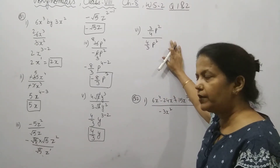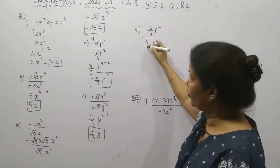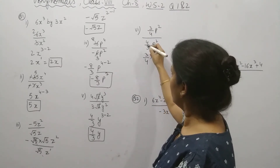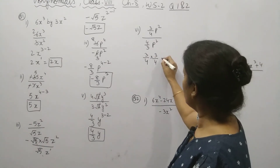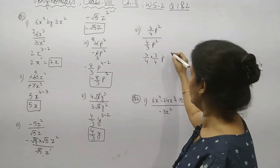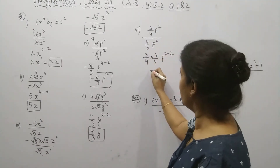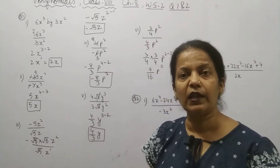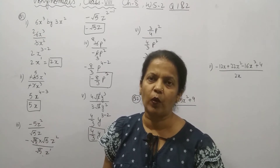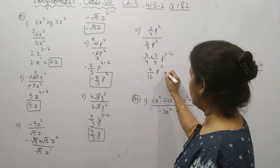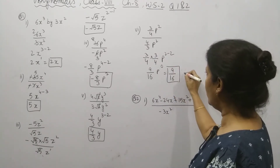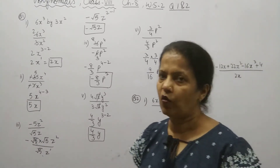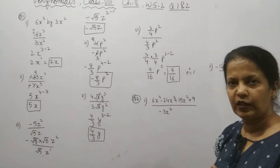Now come to the sixth part. We have 3/4 upon 4/3 — how will you solve this? This you have done in your previous classes. It will come in reciprocal form. And for P: 2 minus 2. P power 2 minus 2 is 0. We have already learned that anything to the power 0 equals 1. So the answer is 9/16 only, because P power 0 equals 1. Instead of P⁰, we substitute its value as 1.